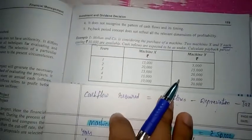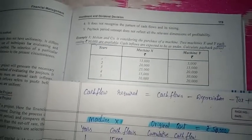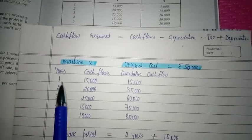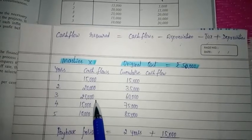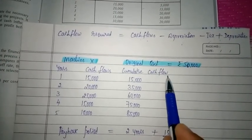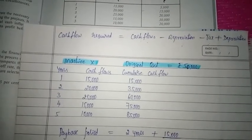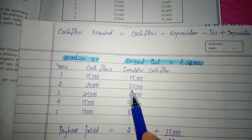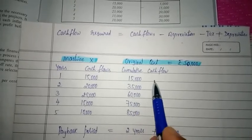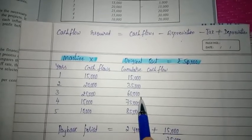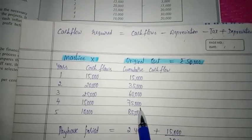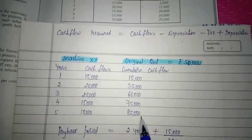Here uneven cash flow is given, so the method is different. Let us calculate payback period for machine X. Write the years — they have given 5 years — and cash flows: 15,000, 20,000, 25,000, 15,000 and 10,000. Since this cash flow is uneven, we need to calculate cumulative cash flow. First year: 15,000. Second year: 15,000 plus 20,000 equals 35,000. Third year: 35,000 plus 25,000 equals 60,000. Fourth year: 60,000 plus 15,000 equals 75,000. Fifth year: 75,000 plus 10,000 equals 85,000.